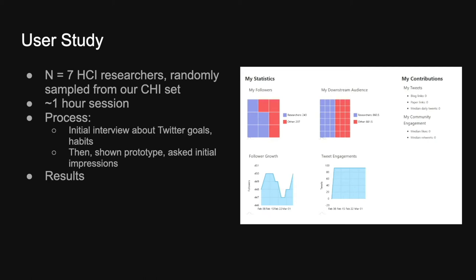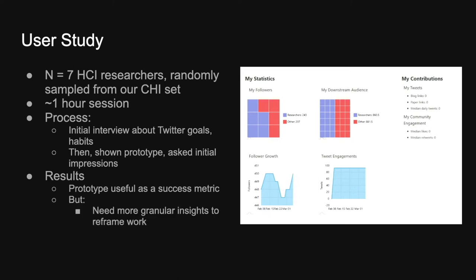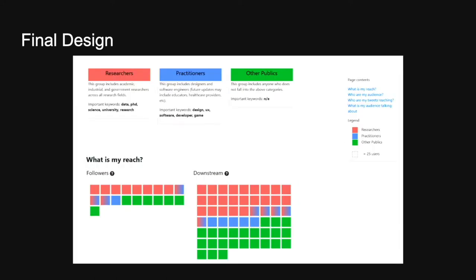We had a couple of main takeaways from these initial sessions. First, the prototype was really useful as a success metric — many researchers wanted to know whether they were reaching outside the researcher bubble, like whether designers or software engineers were seeing their tweets. But they also needed more granular insights about their audience; just knowing whether tweets were reaching non-researchers wasn't yet helpful enough to frame their work more effectively. They also needed more guidance on how to use the information we provided to leverage it into more effective tweets about their research.